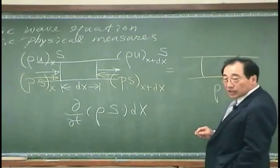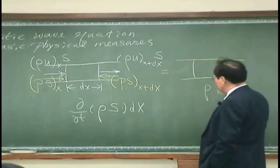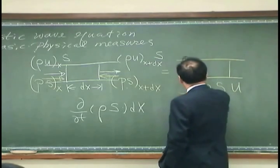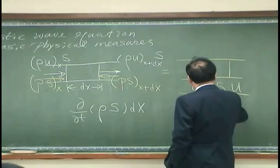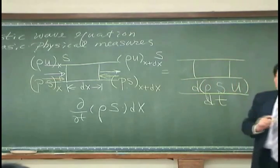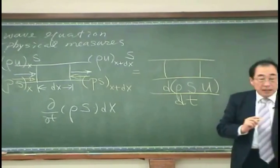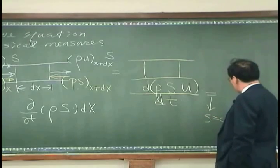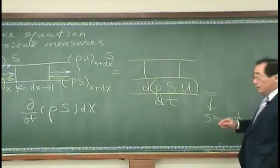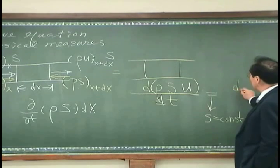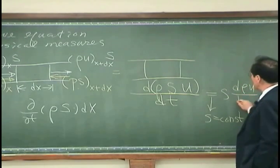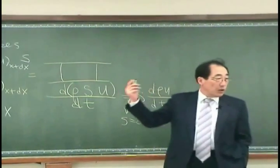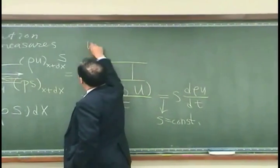And this will be accelerated, right? So that is u and I want to differentiate this with respect to time. And if s is constant, then I can write this as d s rho u dt, and so on and so on.